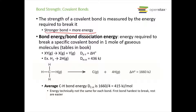This bond energy, also called the bond dissociation energy, is the energy required to break a specific covalent bond in one mole of gaseous molecules. Your book has tables 7.2 and 7.3 that give you some average bond lengths and bond energies. What we are demonstrating with these bond energies is we have some X-Y, two atoms bonded together, and we want to break them apart into gaseous X and gaseous Y, with some delta H required to do that.